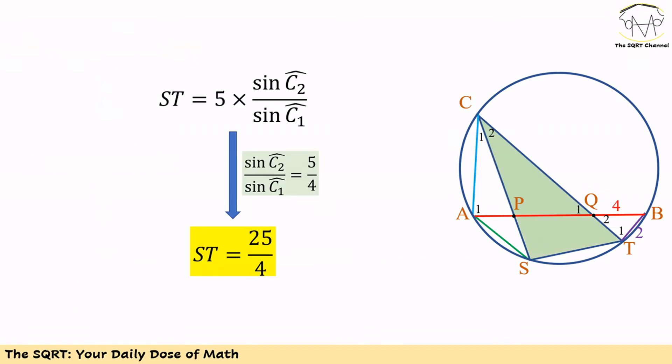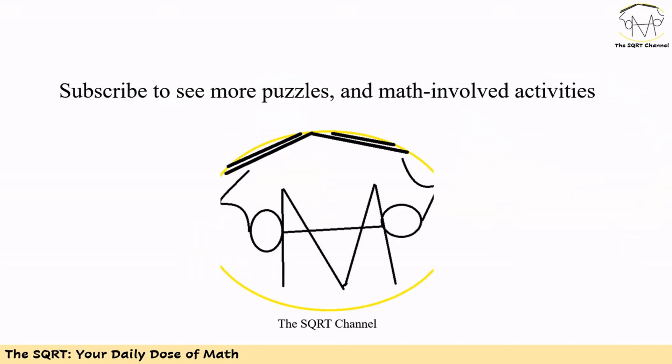Now that we have sine of C2 over sine of C1 equals 5 over 4, and ST equals 5 times sine of C2 over sine of C1, we get ST equals 25 over 4. That's our final answer. Thanks for watching — if you'd like to see more math olympiad content, please subscribe to the channel.